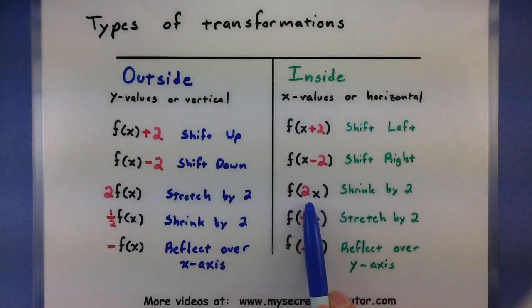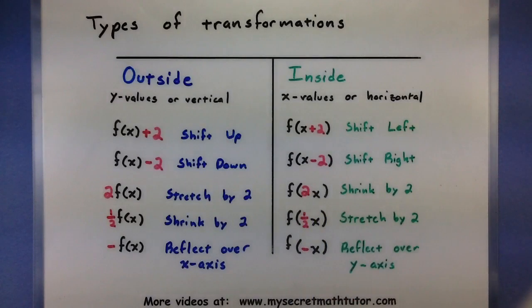We can do the same multiplying on the inside of the function. It has a slightly different effect, but remember these are affecting things in the horizontal direction. So multiplying by 2 on the inside will shrink it by 2. Multiplying by a half will stretch it by 2.